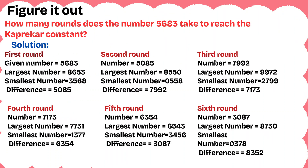Question 4: how many rounds does the number 5,683 take to reach the Kaprekar constant 6,174? Round 1: given number 5,683 — largest is 8,653, smallest is 3,568, difference is 5,085. Not the Kaprekar constant. Round 2: number is 5,085 — largest is 8,550, smallest is 0,558, difference is 7,992. Also not the Kaprekar constant.